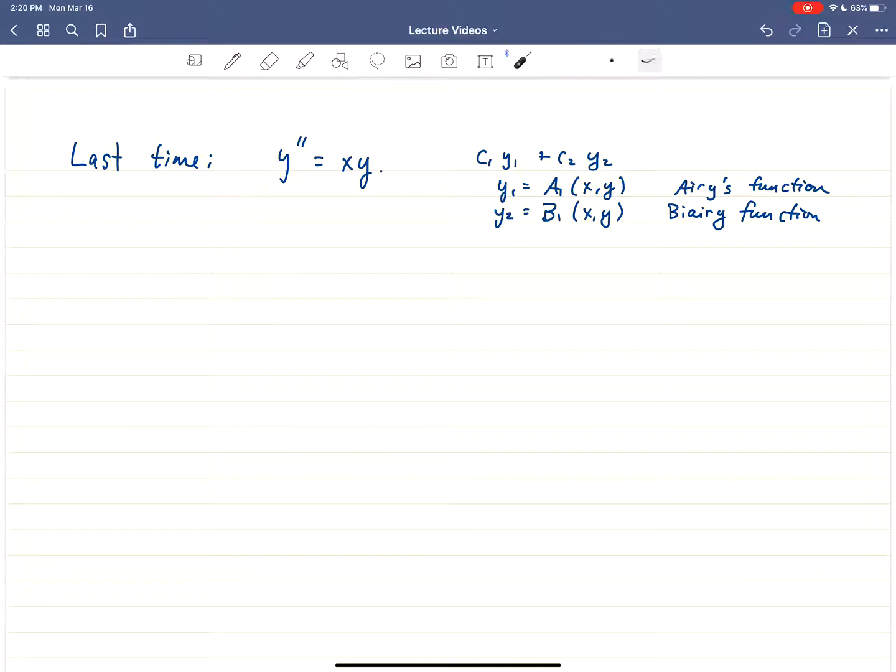We solved this differential equation last time. It wasn't so hard, given all that we had done with power series already. What we're going to do next is we're going to study what's called Weber's equation. Weber's equation is actually a big class of equations. This is just one example of what's called a Weber equation. But we're going to study y double prime equals x squared y.